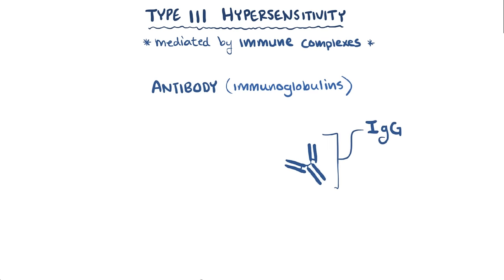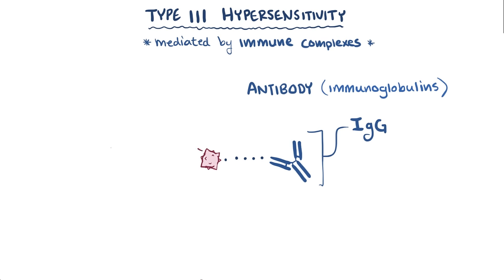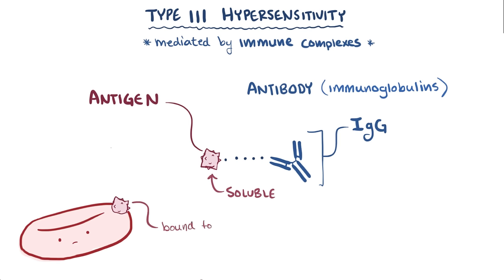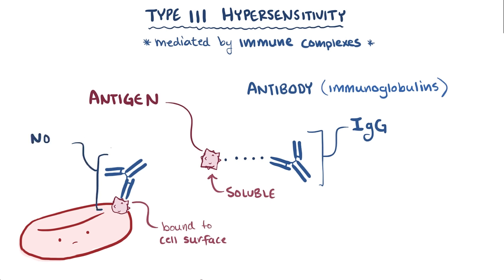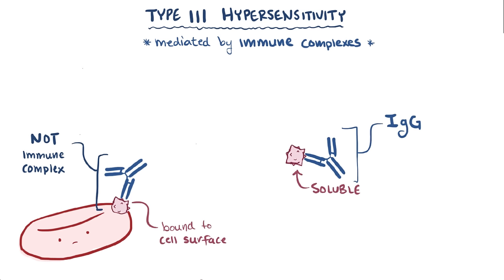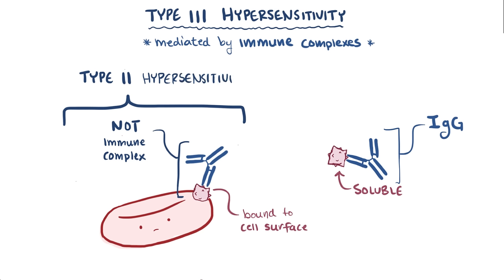All antibodies are specific, meaning that they recognize specific molecules called antigens — the second part of immune complexes. Antigens can come in all sorts of flavors: some float around in the blood by themselves and are soluble, but some are bound to cell surfaces. Immune complexes are formed when antibodies bind to soluble antigens. Antibodies can also target antigens on cell surfaces, but these aren't considered immune complexes. This is the first major distinction between type II hypersensitivity reactions, which involve antibodies binding to antigens on cell surfaces, and type III hypersensitivity reactions, which involve immune complexes with soluble antigens.